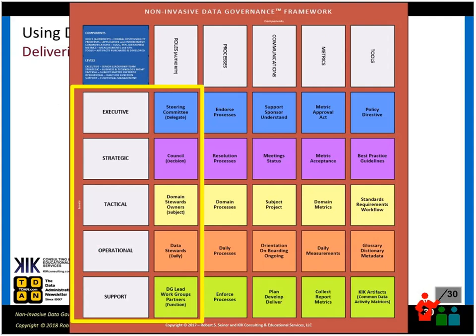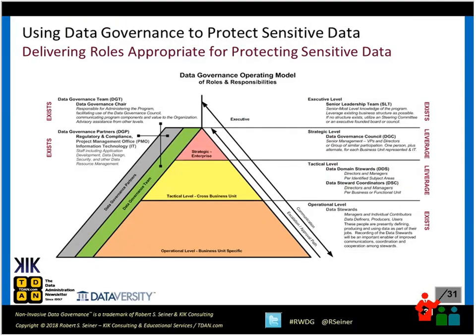At the executive level you have a steering committee; at the strategic level, a council; at the tactical level, domain stewards or enterprise data subject matter experts; data stewards at the operational level; and the data governance group, team, or office at the support level, along with working groups and partners. The pyramid diagram is the model I share most often, with executive, strategic, tactical, and operational levels, each with different names for the roles.